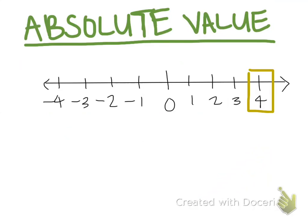If I look at four, I have to go one, two, three, four spaces to zero. So the absolute value of four is four.